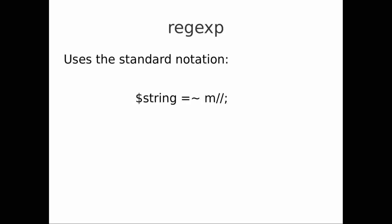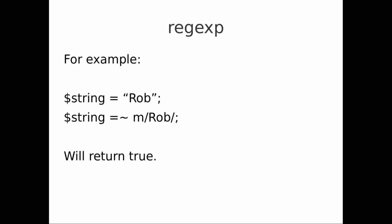Our standard notation for a regular expression in Perl uses this construct. We have a string — a scalar — and we use the equal sign and the tilde, which is the shift character next to the number one. Then we use an M for match, and typically two slashes. For example, if we have a string with 'rob' and we say does this string match the characters 'rob', in this case it will return true — that string has those characters, there's a match.